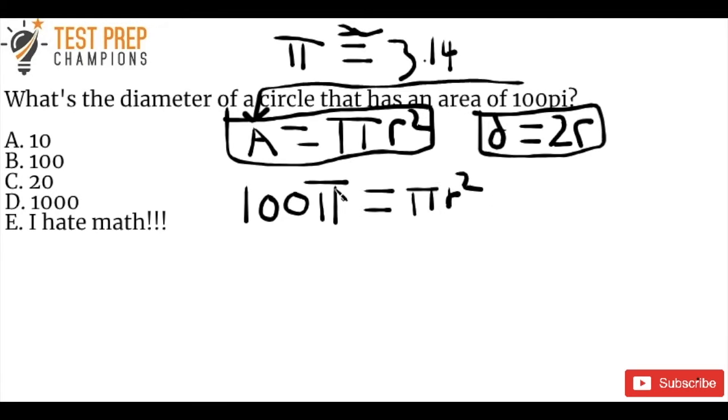Since we've got π on both sides of the equation, we can divide π out and clear π out here. So we can rewrite this as 100 equals r².